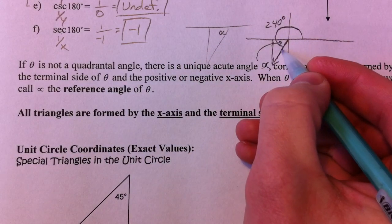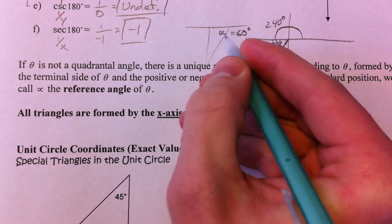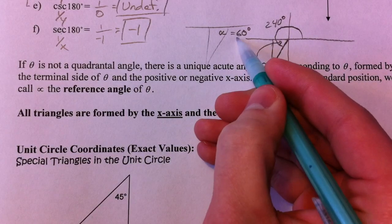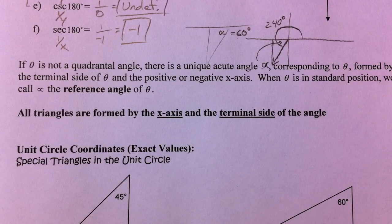Because we've gone 60 degrees past 180, alpha is 60 degrees. And so you can think of that as your angle in your first quadrant, and it's just going to be a reflection image of that. It's just going to be positive or negative, respectively.